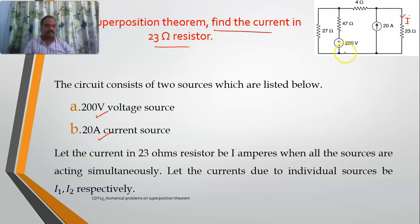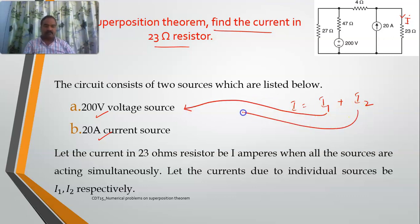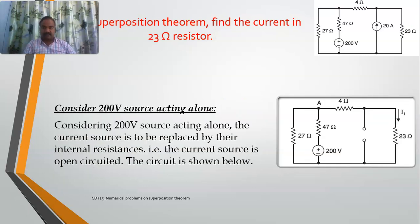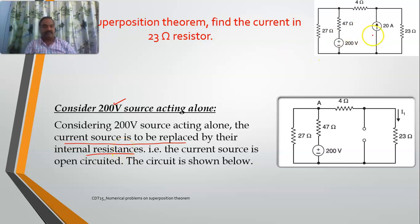Since there are two sources, I will take the total current as i1 plus i2, where i1 is the current due to the 200 volt voltage source and i2 is the current due to the 20 ampere current source. I will determine their individual contributions and then add them up. First, let's consider only the 200 volt voltage source acting alone. In that case, the current source is to be replaced by its internal resistance.